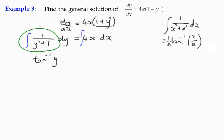equals, and we've got 4 times x squared over 2 plus c as our right-hand side. So simplifying that, on the right-hand side, we've got 2x squared plus c.